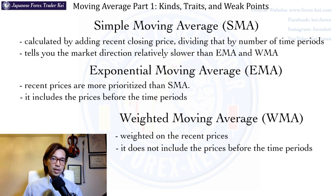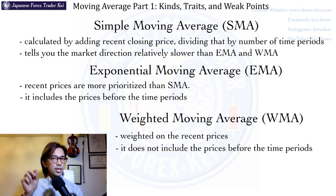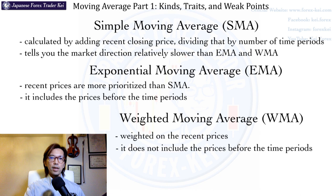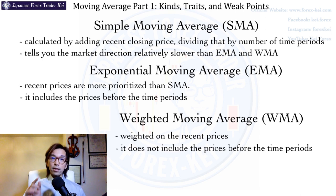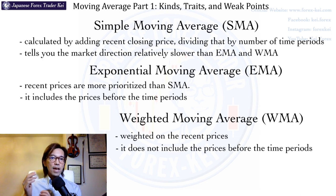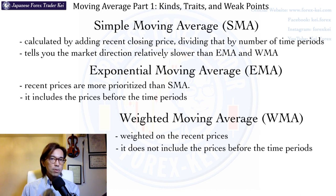Exponential moving average puts more weight on the prices of the most recent candlesticks than simple moving average. You can search the exact calculation on Google, but just remember it reacts quicker than simple moving average. There's also the weighted moving average, which is even more weighted than exponential, so it reacts even more quickly. However, because it reacts very quickly, it tends to give you more fake signals on the market.